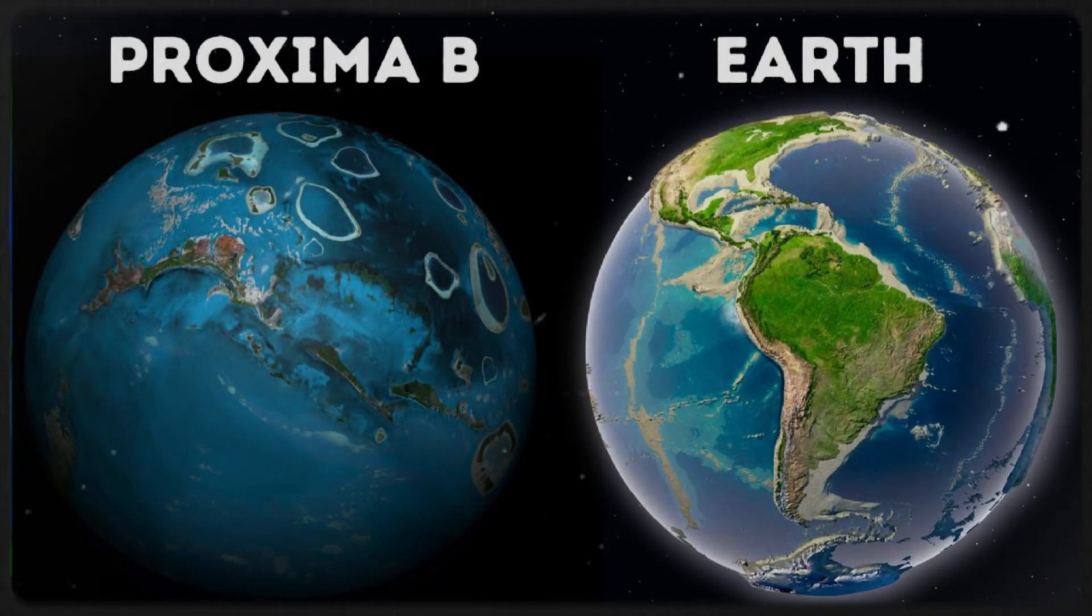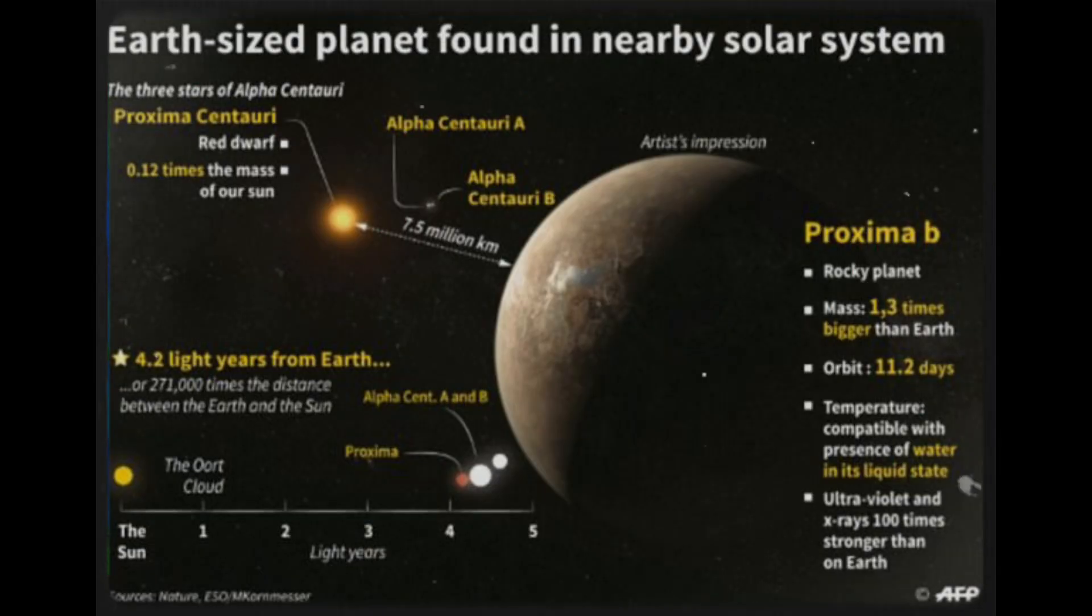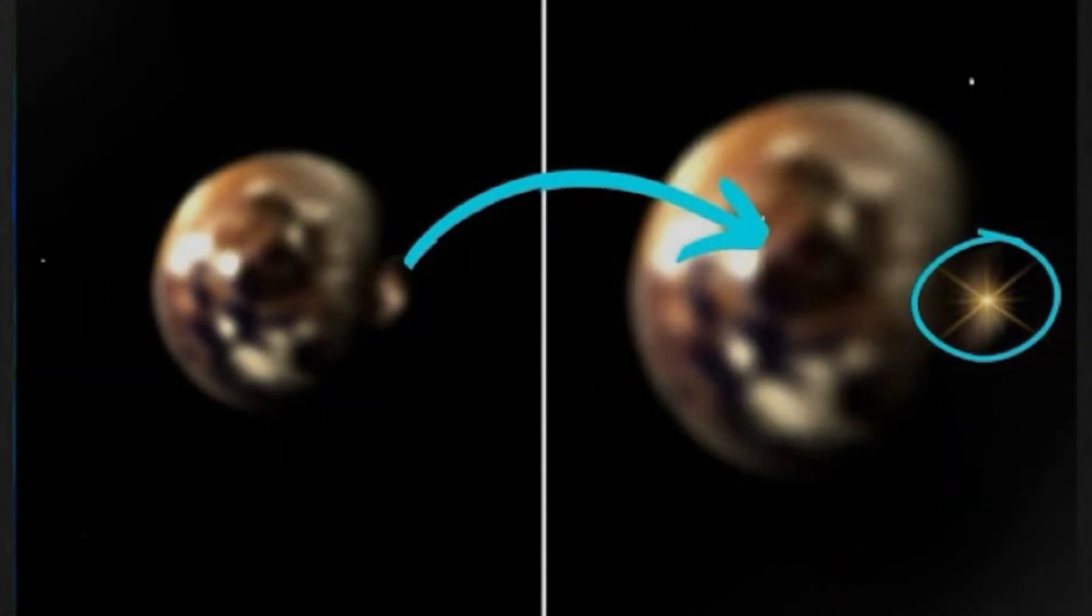Closer examination reveals that Proxima b is quite similar to Earth. The exoplanet appears to have a radius of 1.1 times that of Earth and a mass 1.3 times greater with a similar density. It is also a rocky planet.